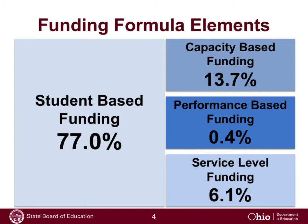Student-based funding is the largest component of the overall formula, about 77% of the total. It's important to reflect that not every element of the formula carries the same weight. Performance-based funding, while there are two separate elements, comprises less than half a percent of the overall total funding within the formula.